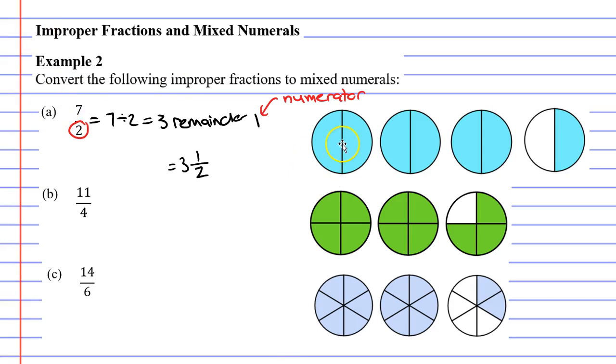And if you look at the image at right, you can see we've got 3 completely colored in circles, giving us our whole number of 3, and then finally half colored in at the end.